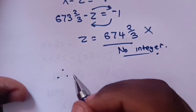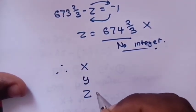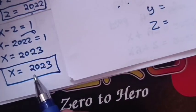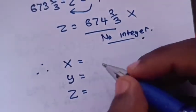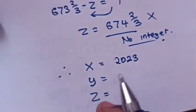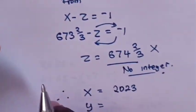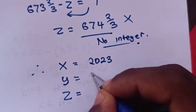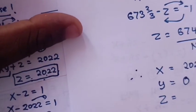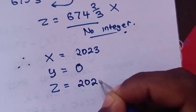Our integer solutions come from Case 1: x = 2023, y = 0, z = 2022. These are our answers.